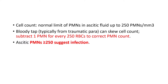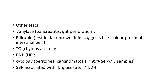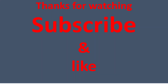Cell count: normal is less than 250 cells; if 250 or more polymorphonuclear cells, this suggests infection. Other investigations include amylase level, bilirubin, triglycerides, BNP, cytology, glucose, and LDH, which help with differential diagnosis. Amylase may be high in pancreatitis or gut perforation; bilirubin may be high in biliary leak or proximal intestinal perforation; triglycerides may be elevated in chylous ascites; BNP may be high in heart failure; cytology may diagnose peritoneal carcinomatosis; and low glucose with increased LDH alongside elevated polymorphonuclear cells may suggest spontaneous bacterial peritonitis.